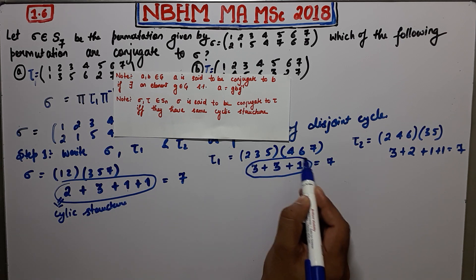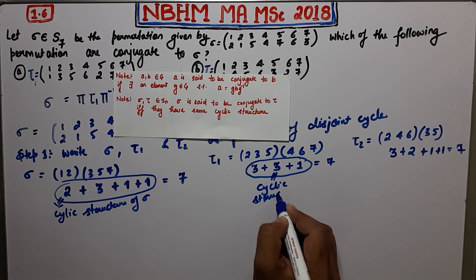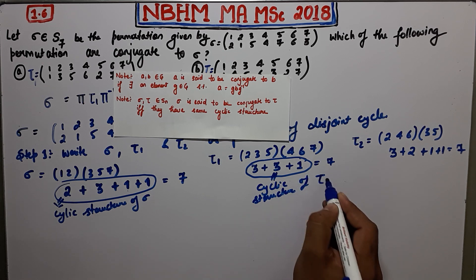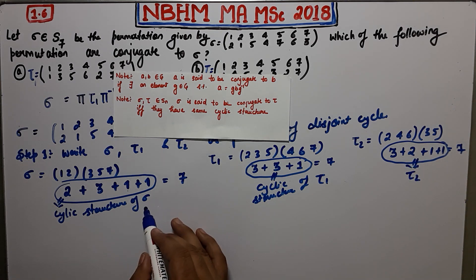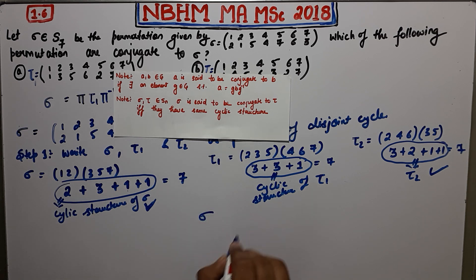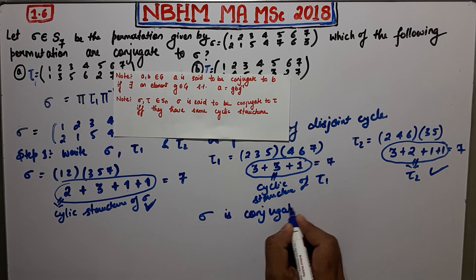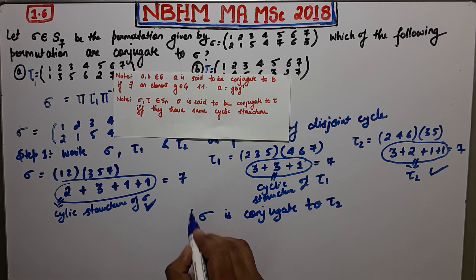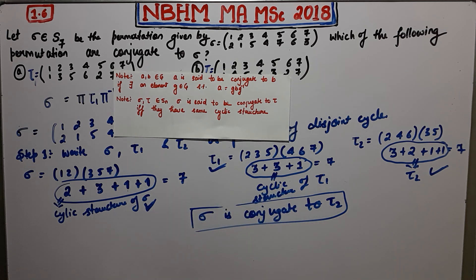Comparing the cyclic structures: sigma has structure 2+3+1+1, τ1 has structure 3+3+1, and τ2 has structure 3+2+1+1. The cyclic structure of sigma equals the cyclic structure of τ2. Therefore, by Note 2, sigma is conjugate to τ2. Since sigma and τ1 do not have the same cyclic structure, sigma is not conjugate to τ1.